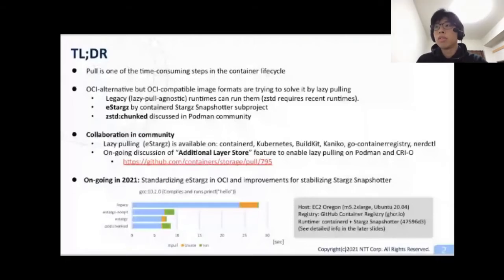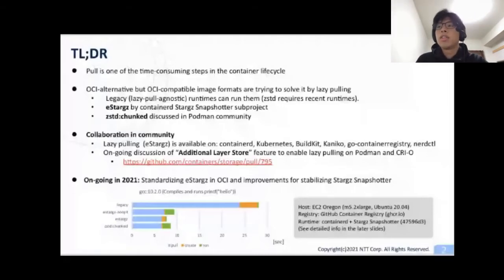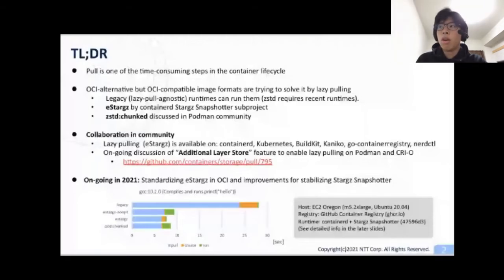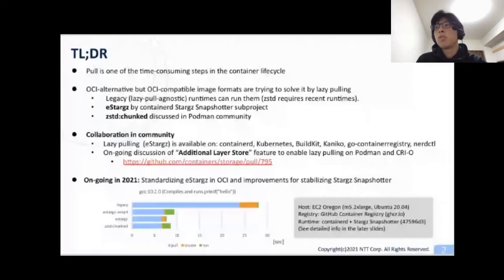Recently, tools start to support lazy pulling. eStargz is usable with tools in the community, including ContainerD, Kubernetes, BuildKit, Kaniko, go-container registry, and Nerdctl. And there is also an ongoing discussion of enabling lazy pulling on Podman and CRI-O. In 2021, we are working on standardizing lazy pulling to OCI image spec and working on improvements for stabilizing the Stargz Snapshotter.